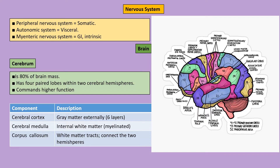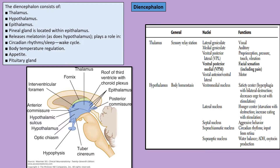The frontal lobe is the primary motor area. The parietal lobe is for taste perception and primary sensory area, Brodmann areas 3, 1, 2. The temporal lobe is for olfaction and hearing, and the occipital lobe is area 17 for the visual cortex. Important areas include the associative cortex — Wernicke's area, area 22 — the auditory cortex areas 41 and 42, and Broca's speech area in the frontal lobe, areas 44 and 45.